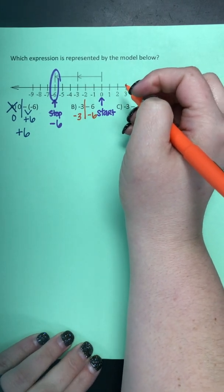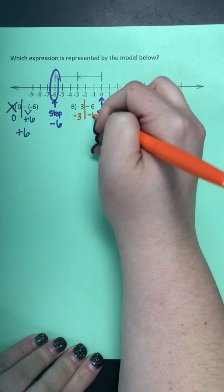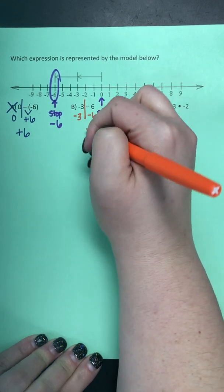Our integer song says same signs you add, and because these are both negative, negative three, negative six, we're going to add them together.